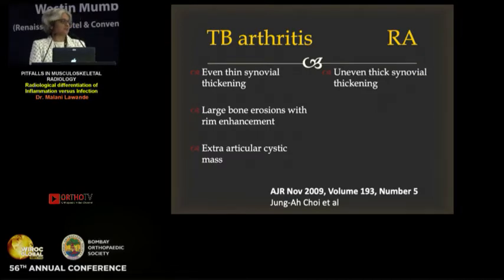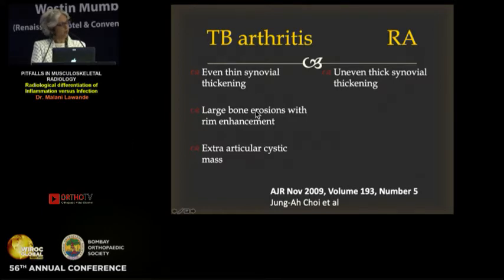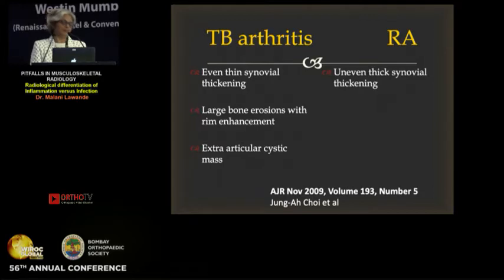The main problem is differentiating tuberculous arthritis from rheumatoid arthritis. There is an article which very clearly talks about these differences. When the synovial thickening is thin and smooth, it's more likely tuberculous. In rheumatoid or inflammatory arthritis, it's uneven, thick, irregular. Larger bone erosions and more marrow edema are seen with tuberculous arthritis. If you have extra-articular cystic masses, abscesses, fluid collections, that makes it clearly tuberculous. But the lesions don't read the textbooks, so exact differentiation is seen many times but not all the time, and the uncertainty still remains.